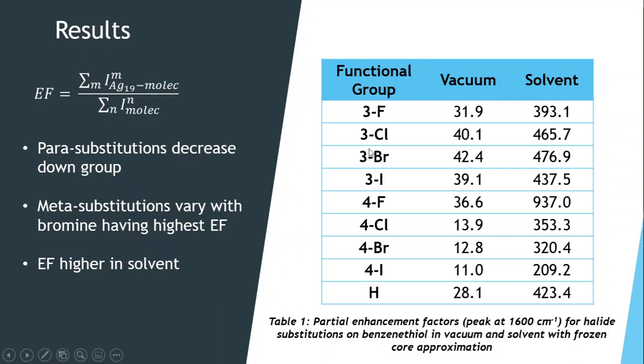Looking at the table of enhancement factors here, we can see that for para substitutions, there is a consistent decrease down the group, and for meta substitutions, there is no such trend, but we do point out that bromine has the highest enhancement factor for this substitution. We can also clearly see that between vacuum and solvent, the enhancement factor is much higher when the system is in the solvent.